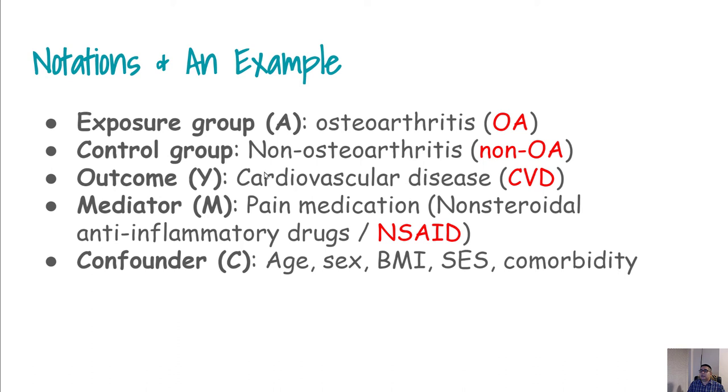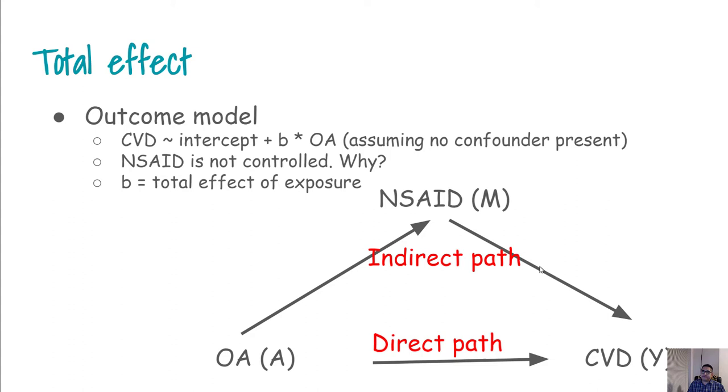If we are working on observational data, obviously there are some confounders that we need to adjust for. For example, in our example we have confounders such as age, sex, BMI, socioeconomic status, and comorbidity.